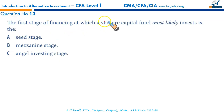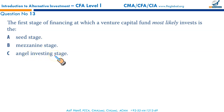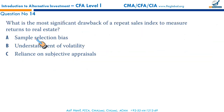The first stage of financing at which a venture capital fund most likely invests is the seed stage — yes, that is correct. The seed stage is the first stage at which venture capital funds invest. The next stage after seed is what you call the angel investing stage, and then the mezzanine stage, where funding is provided by venture capital funds in preparation for the IPO. That makes A — seed stage — the correct option.